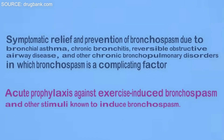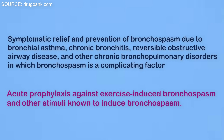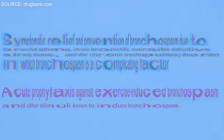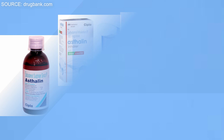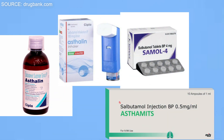The uses of salbutamol. Salbutamol is indicated for the symptomatic relief and prevention of bronchospasm due to bronchial asthma, chronic bronchitis, reversible obstructive airway disease, and other chronic bronchopulmonary disorders in which bronchospasm is a complicating factor. It is also given as acute prophylaxis against exercise-induced bronchospasm and other stimuli known to induce bronchospasm. Salbutamol is available in various dosage forms like syrup 2 mg, tablet 4 mg, and it is also available as an inhaler.